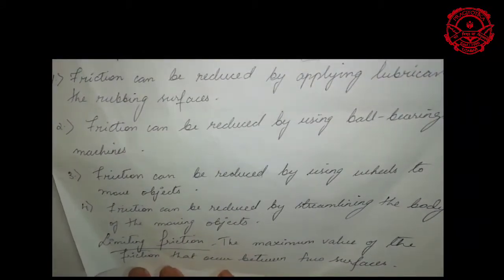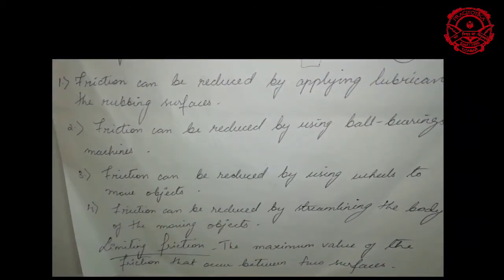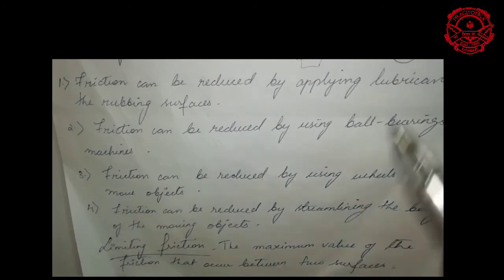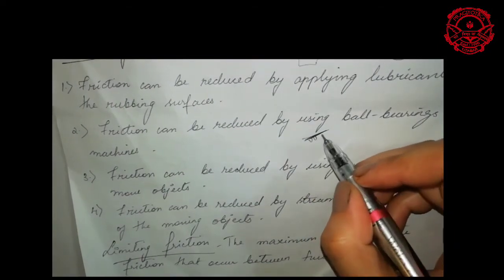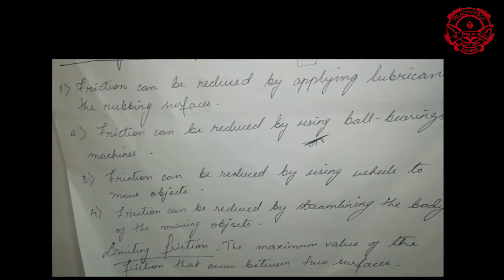The next method is that friction can be reduced by streamlining the body of a moving object. This is done by making the front portion of moving bodies pointed or sharp. If the front portion is not made pointed or sharp, friction will be more. Since the surface of the body is made with pointed or sharp features, it helps reduce friction and prevents the object or person from falling down.